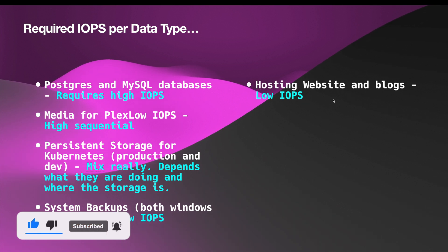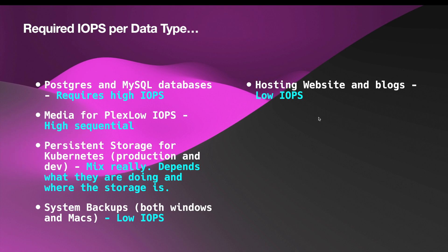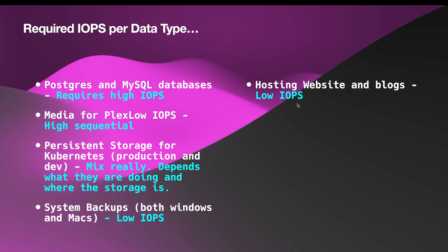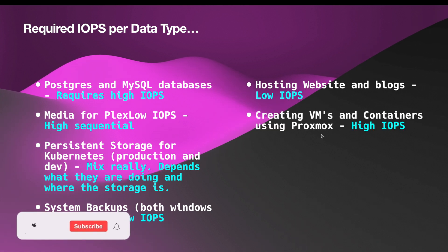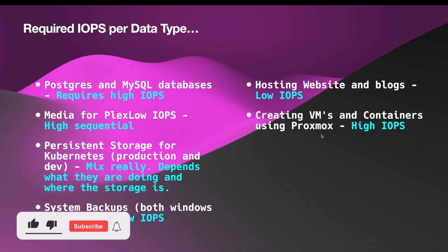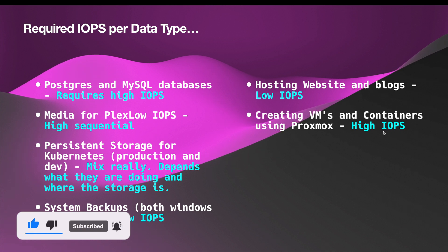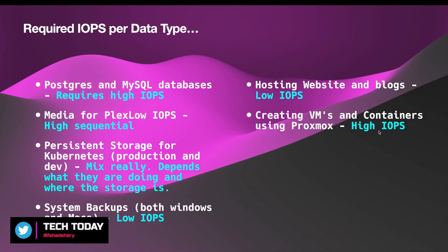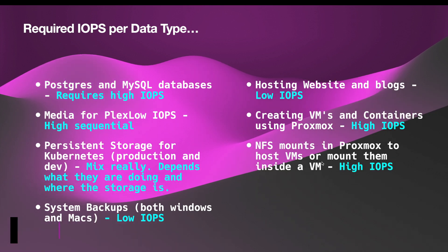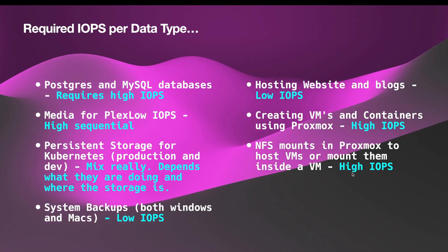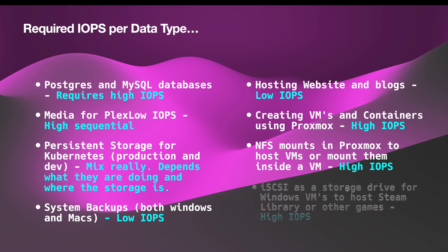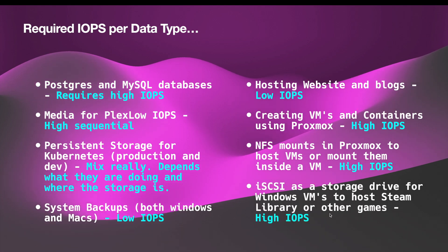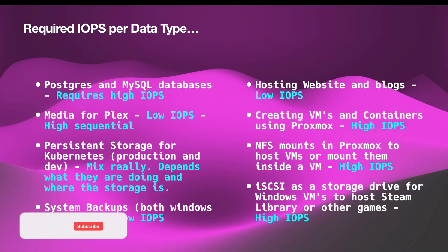Hosting websites and blogs — I host my own website running on top of one of my Kubernetes clusters — requires low IOPS. Creating VMs and containers in Proxmox requires higher IOPS, and that's what the iSCSI block storage is for. NFS mounts can be high or low IOPS depending on use case, as can iSCSI.